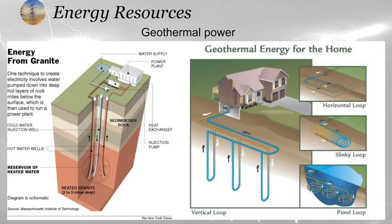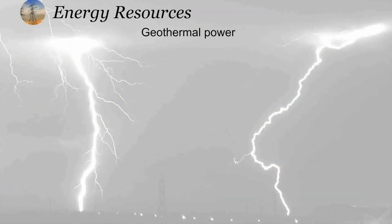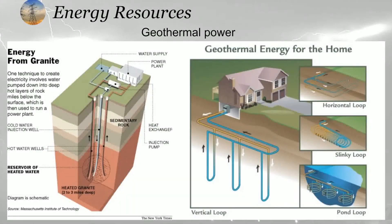In the geothermal power plant, we generally dig a very deep hole and supply cold water, which goes inside and is heated and converted into steam. Other pipes extract the steam, which rotates the turbine, generating electricity. Similarly, we can use the same energy for heating our houses.